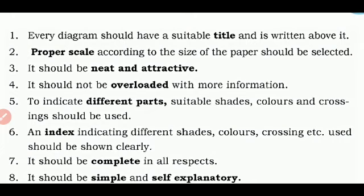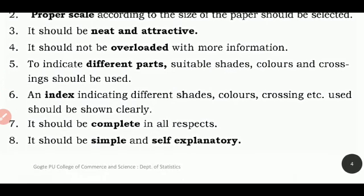Third, it should be neat and attractive. Fourth point, it should not be overloaded with more information. What information is needed? Only that you're going to write. Fifth point, to indicate different parts, suitable shades, colors and crossings should be used. Which means you have to make it more attractive to make it more specific. Suppose the data is having more, if it's more heterogeneous and you want to give a different name. So you are going to use different shadings and all that.